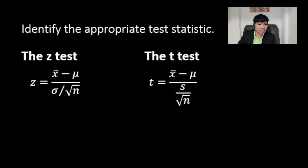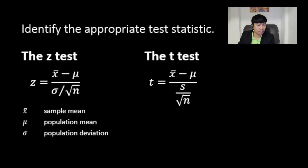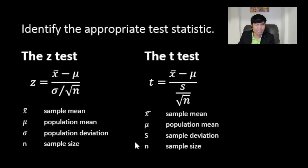The formula for the Z-test is: z equals x-bar minus mu, all over sigma divided by the square root of n. The T-test formula is: t equals x-bar minus mu, all over s divided by the square root of n. They are essentially the same, except the Z-test uses the population standard deviation sigma, while the T-test uses the sample standard deviation s.